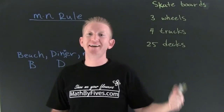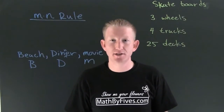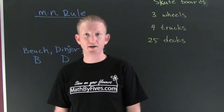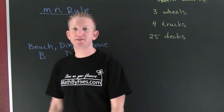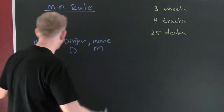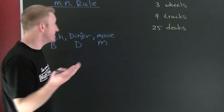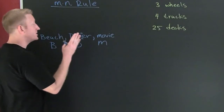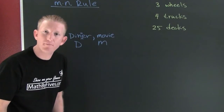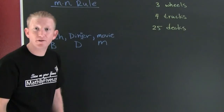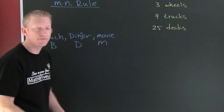Now that we have that definition, let's see how it works. Let's talk about first dates. We're getting to know each other. So for a first date, what can you do? Why don't we say maybe the beach, maybe dinner, maybe the movie. If order matters, we want to find out how many different distinct first dates we can have.